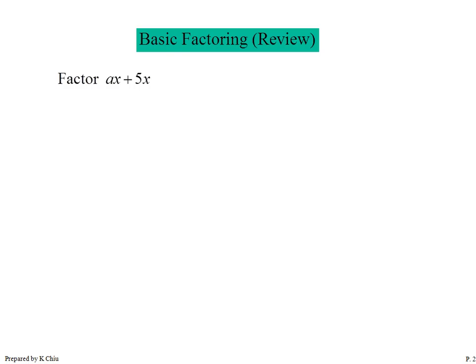So, understanding the question is absolutely important. When we try to make these two terms become one single term — a factor times another factor — we need to identify in these two terms, do they have any common factor? So I am going to factor out the x. Once I factor out the x, what would be the leftover? The leftover will be the original terms divided by the common factor, plus the original terms divided by the common factor.